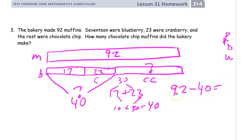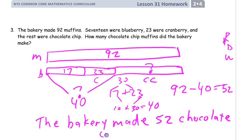Right, and this is something we can solve in our head. And it's going to be 52, isn't it? Because all we have to do is subtract 10s. 52. The bakery made 52 chocolate chip muffins.